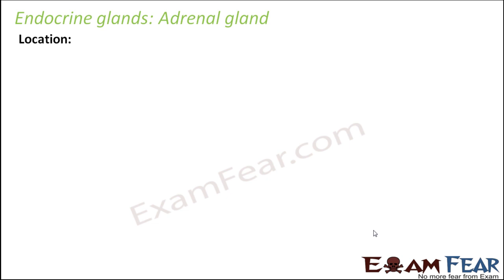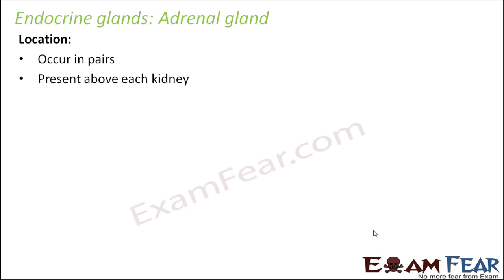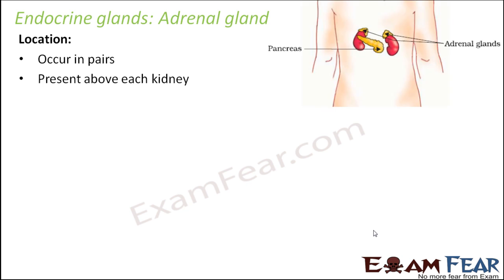Let us see where these glands are located. As mentioned before, they are located just above the kidney. There are two kidneys in our body, so these glands also exist in pairs — one above each kidney. Here you can see the red colored structures are the kidneys, and just above the kidneys you have two yellow colored structures, and they are the adrenal glands.